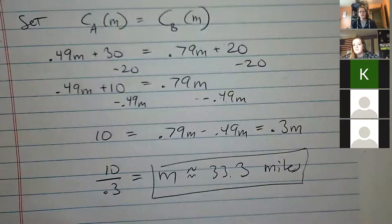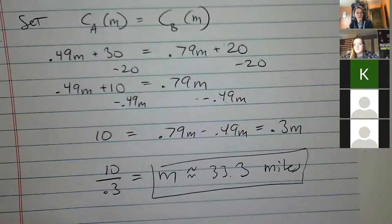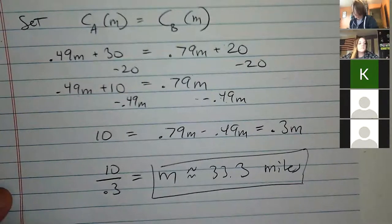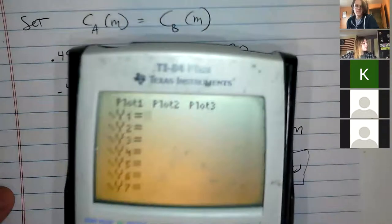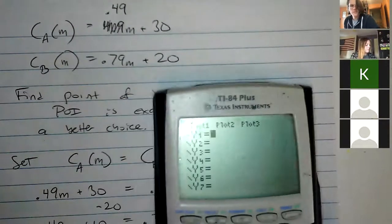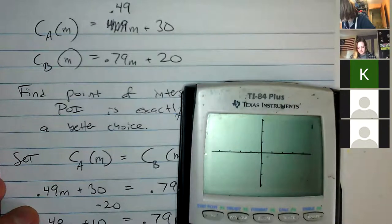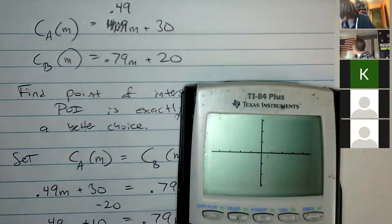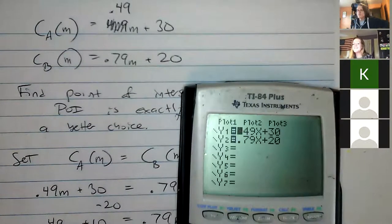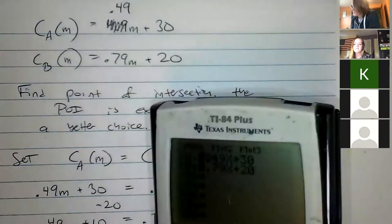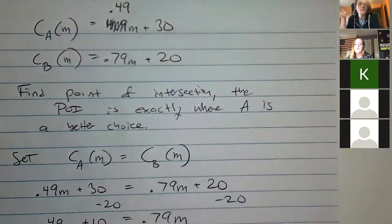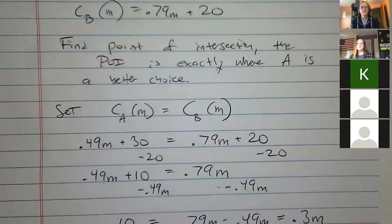You could also graph the two equations and find the point of intersection visually. If numbers work out nicely that's easy; otherwise the algebraic method is preferred. On a graphing calculator you can plot 0.49x + 30 and 0.79x + 20, and it may show the intersection — though window settings matter. Wolfram Alpha is also a great free website: plug in both equations and it'll graph them and likely show the point of intersection automatically.